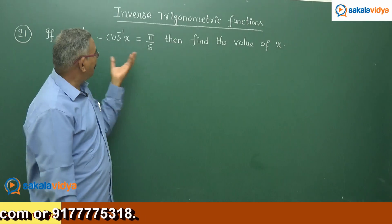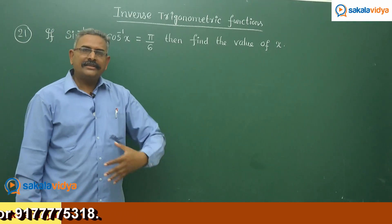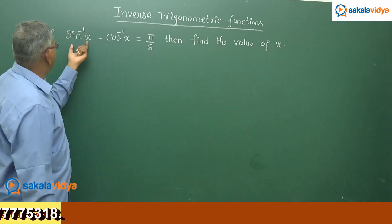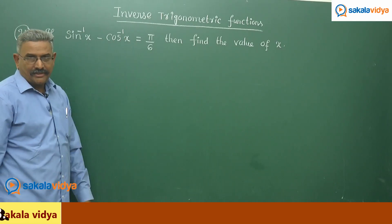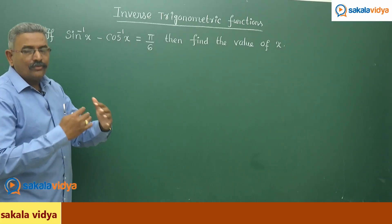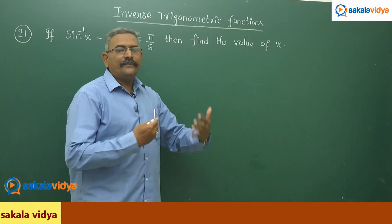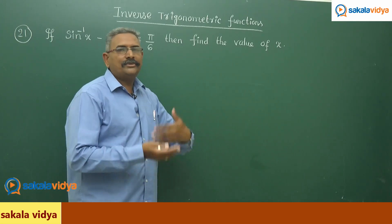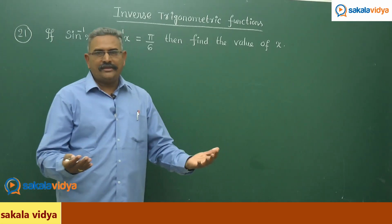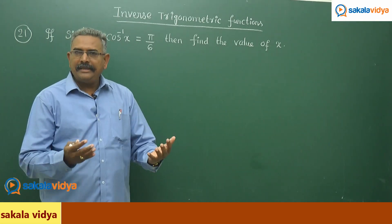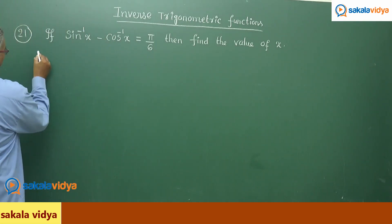So now, in this problem, what is given? The given is sin inverse x minus cos inverse x is equal to pi by 6. We have to make use of the formula, and after solving both equations, we get sin inverse x so that x can be evaluated. Now let us solve it.